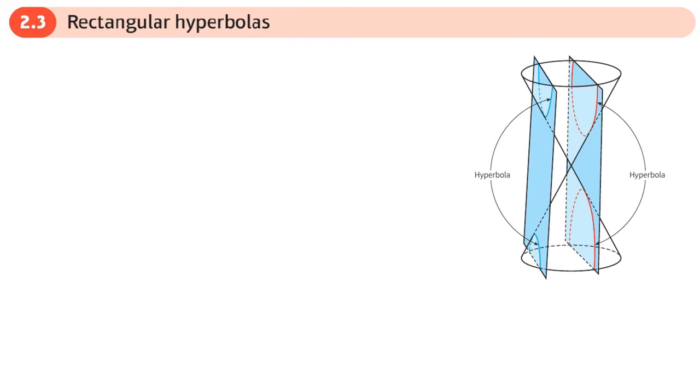This is the third section of the conic sections chapter, and here we're going to look at rectangular hyperbolas. This is another conic section.